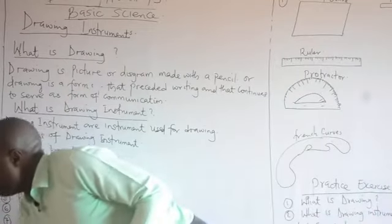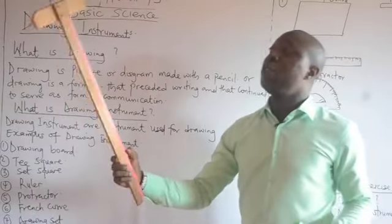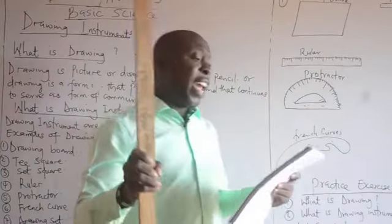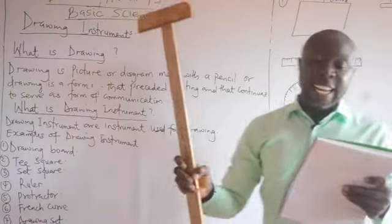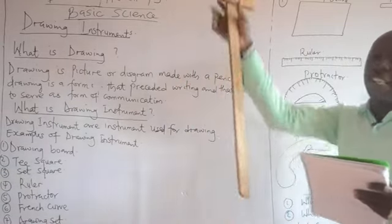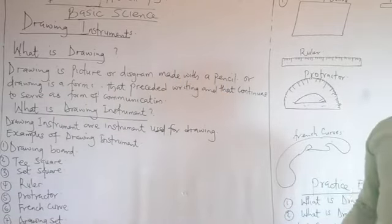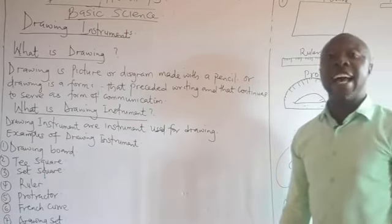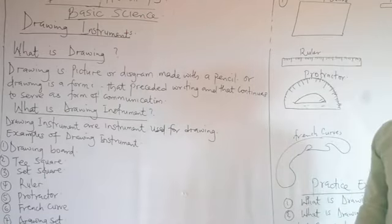If you look at this shape, it looks like the letter T. A T-square is an instrument that has a head and a stock. It is used for drawing horizontal lines and vertical lines.